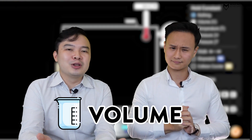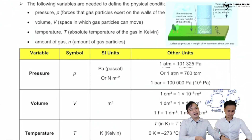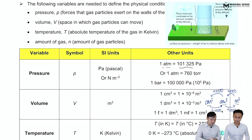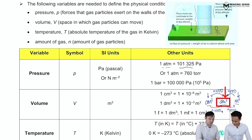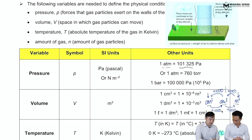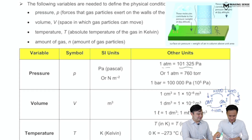Volume is quite simple — it is just the space that the gas particles occupy, so in the context of this animation it's just the container. There are two units you should be comfortable with: cm³ and dm³ and m³. The conversion between cm³ and m³ is 100,000, but for dm³ it's 10³.